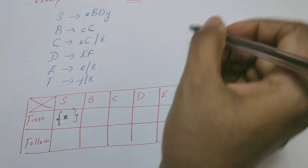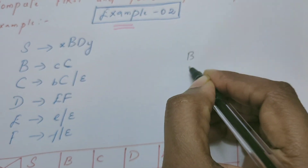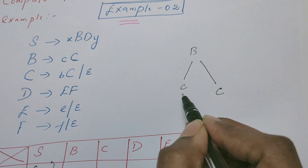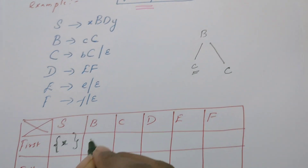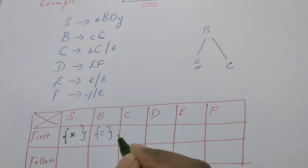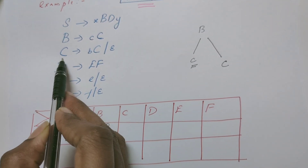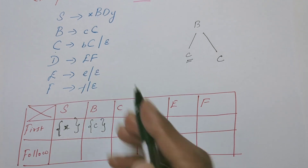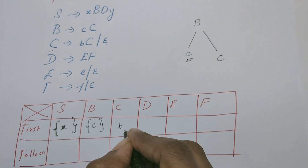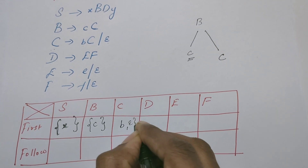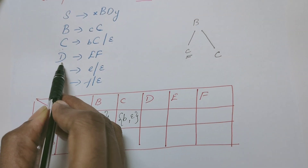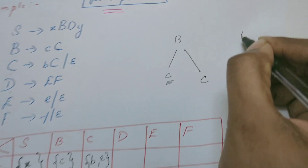Now let us find FIRST of B. In place of B we could replace C followed by a variable C, so the very first symbol is terminal C, so let me directly include C as the FIRST set of B. What is FIRST of C? FIRST of C is terminal B. Since C directly produces epsilon, we can include epsilon also as a FIRST set of C.